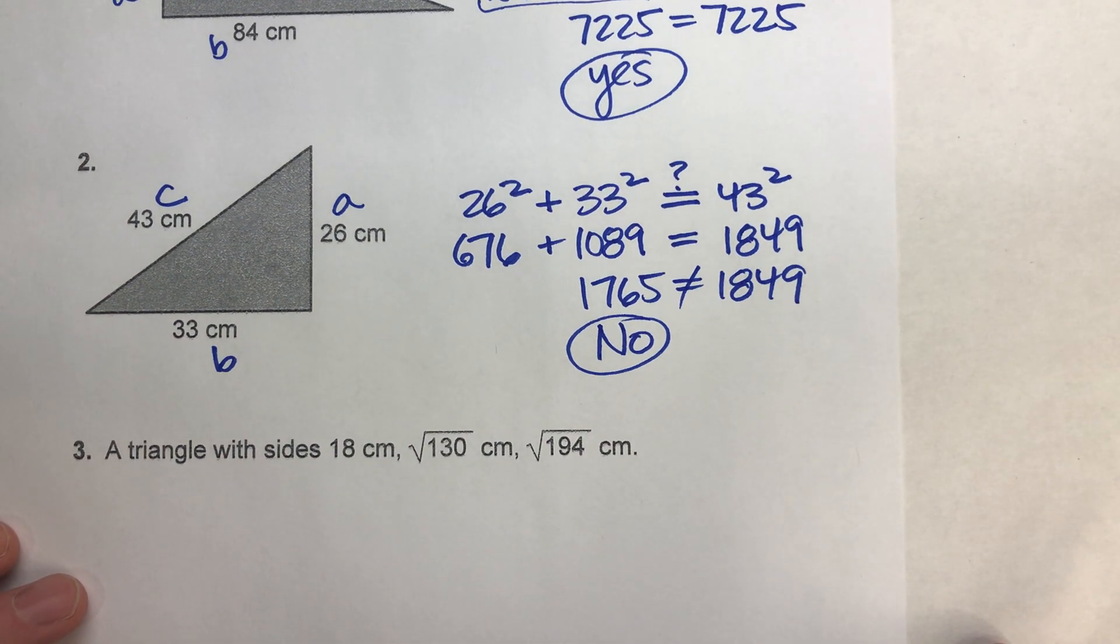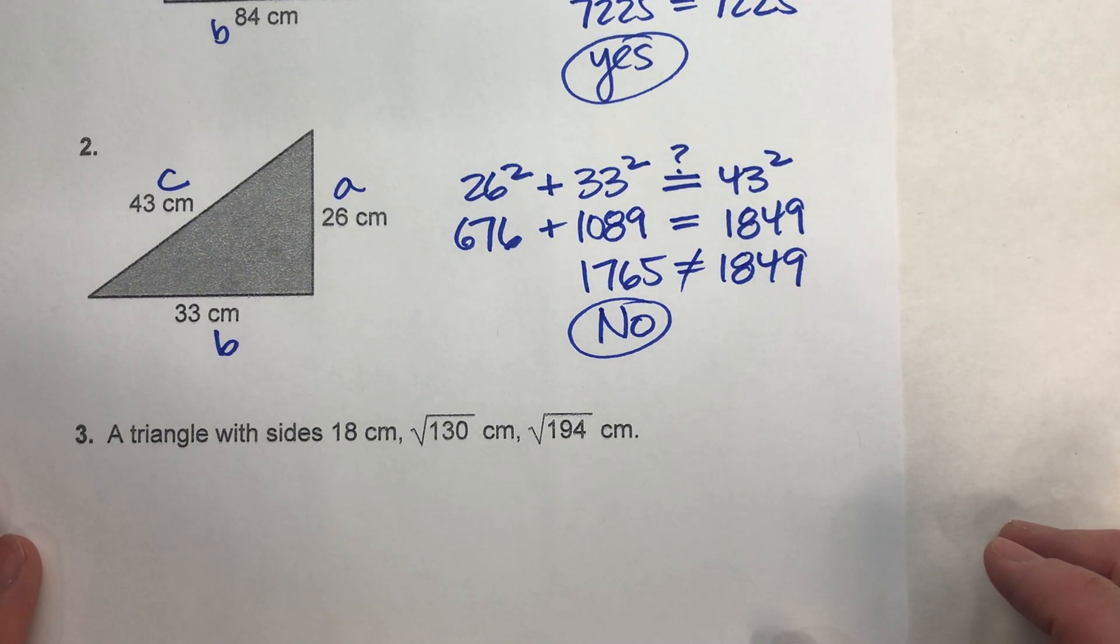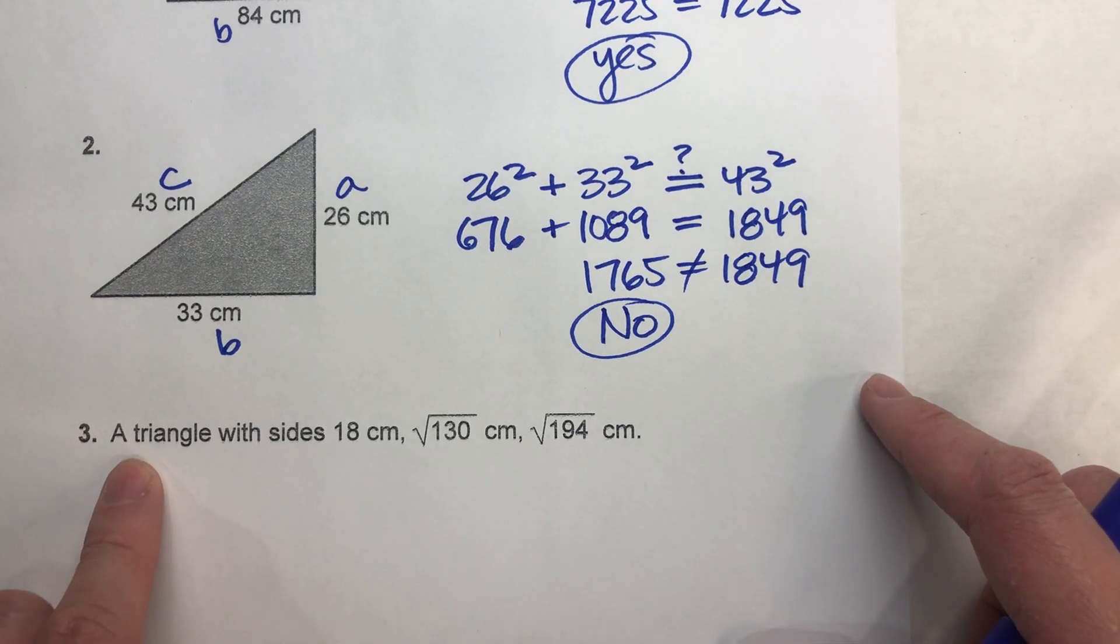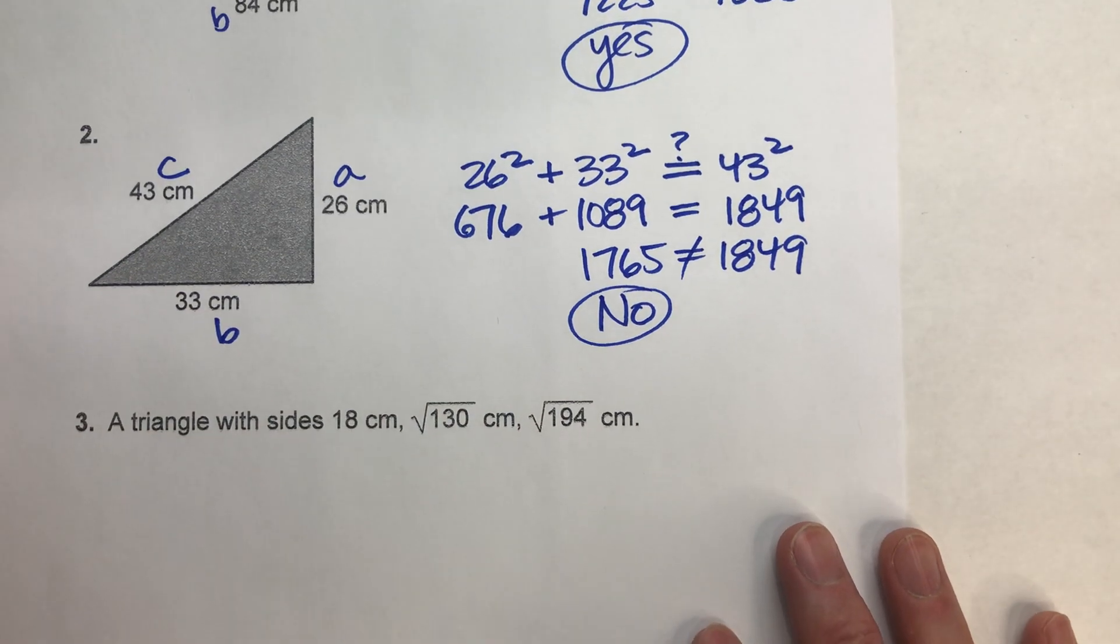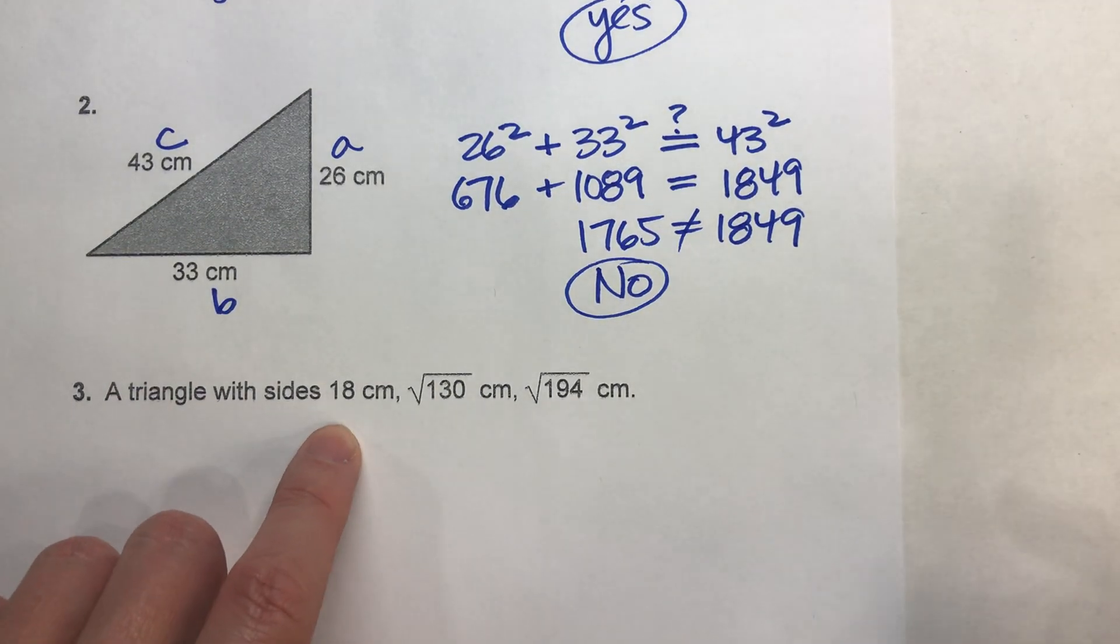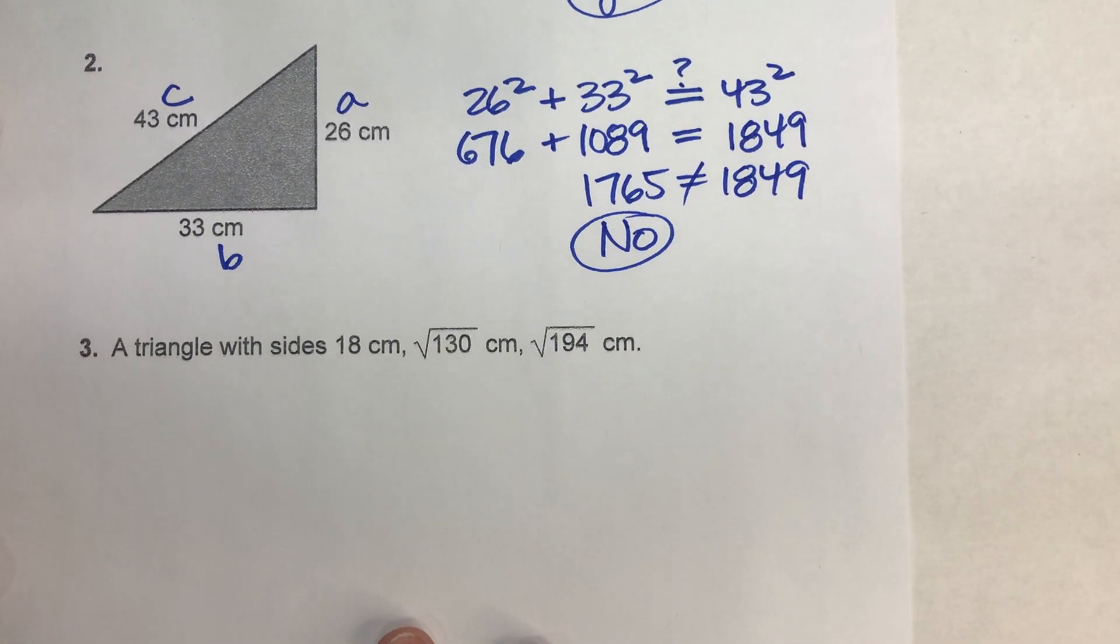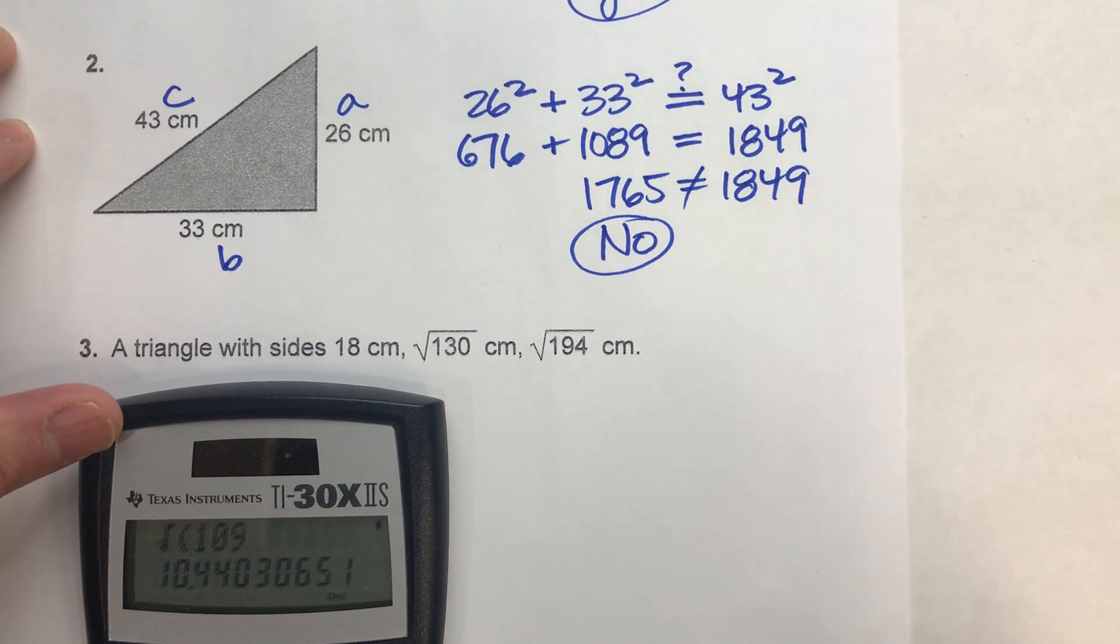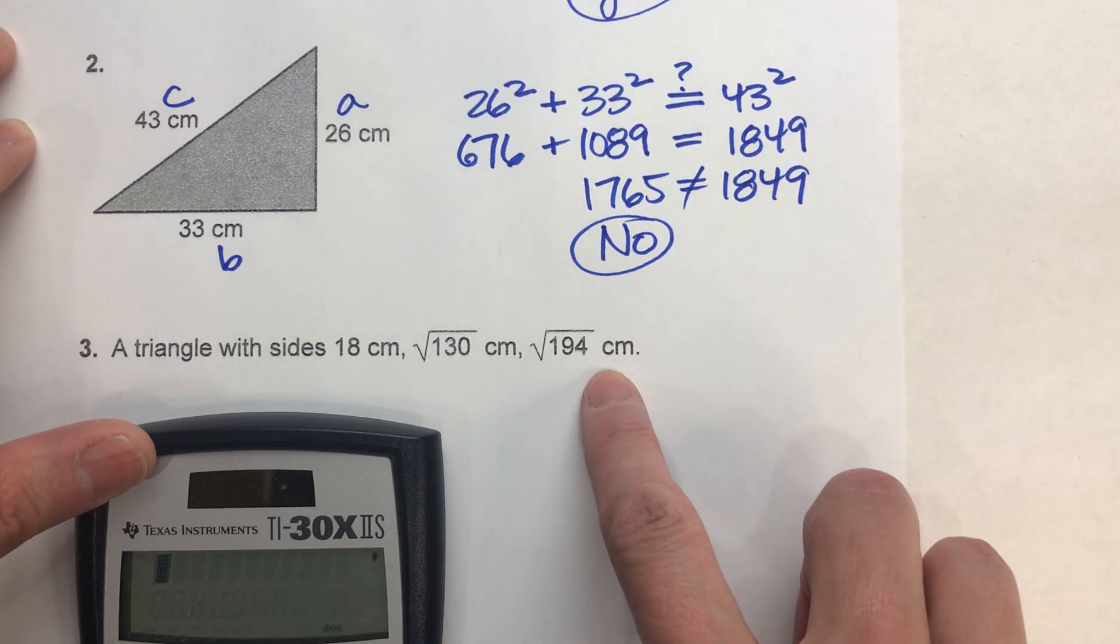We've got time for one more. For number three, notice there's no picture for this one, but do you really need a picture? No, you only need to know the three side lengths. We have a triangle with sides 18 centimeters, square root of 130 centimeters, and square root of 194 centimeters. This one's a little tricky. The first thing we need to know is which side's the longest side. It's kind of hard because two of them are square roots and one of them is a whole number. So the only way to really know which side's the longest side is we actually have to calculate these square roots.